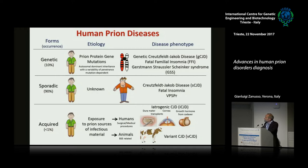The etiology of human prion disease includes genetic, sporadic, and acquired forms. The sporadic form covers more than 90% of cases, and 10% are genetic, and the others are acquired. You remember very well the iatrogenic form and the BSC-related form, like variant CJD. The genetic forms are related to mutations in the PRP gene, and you see here the different disease phenotypes which are related to specific mutations.